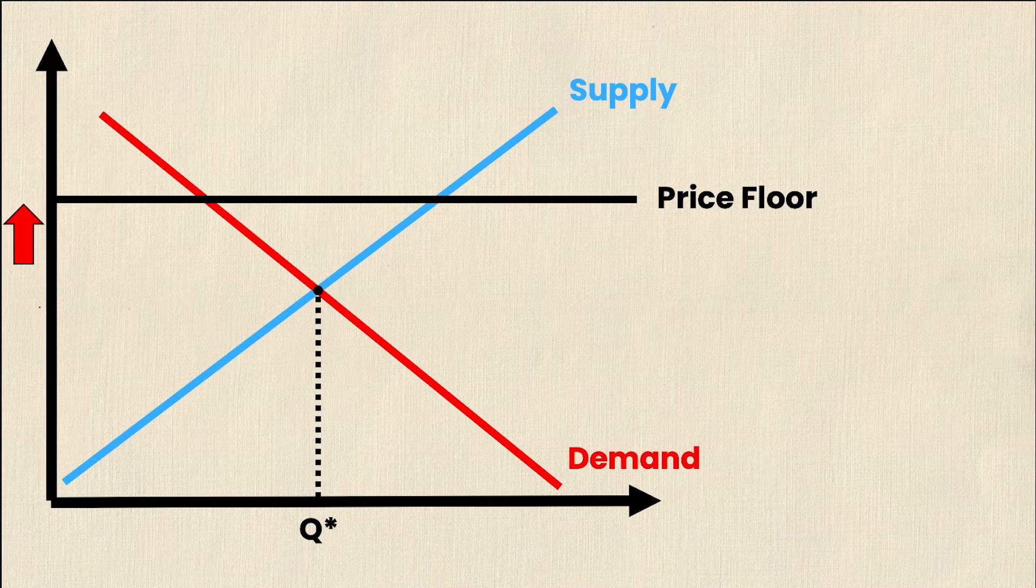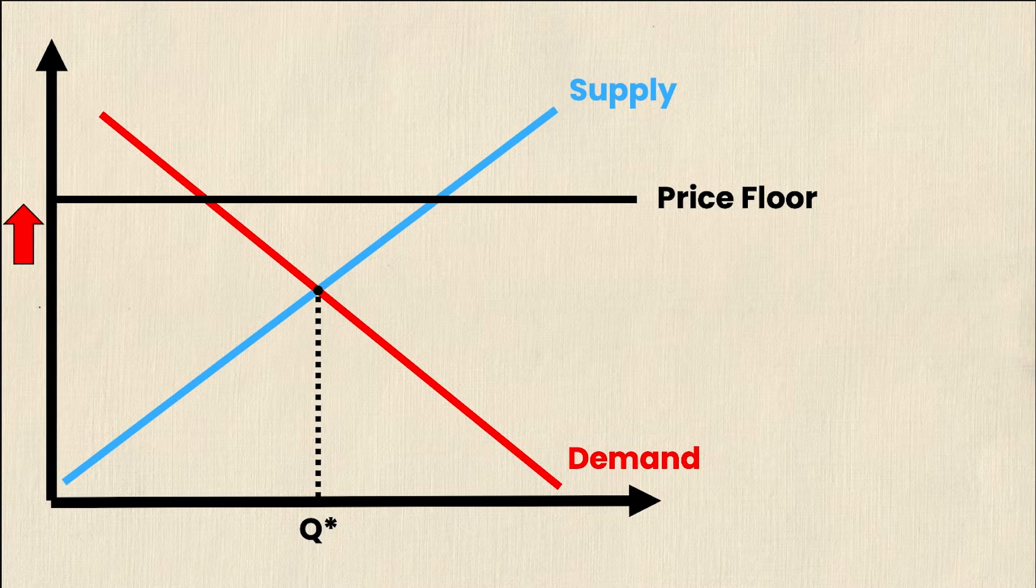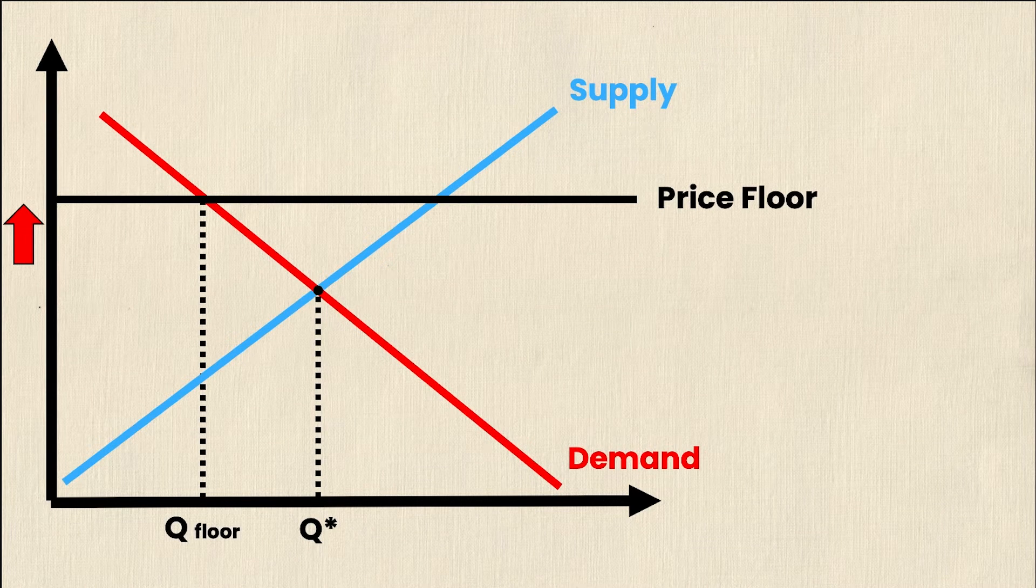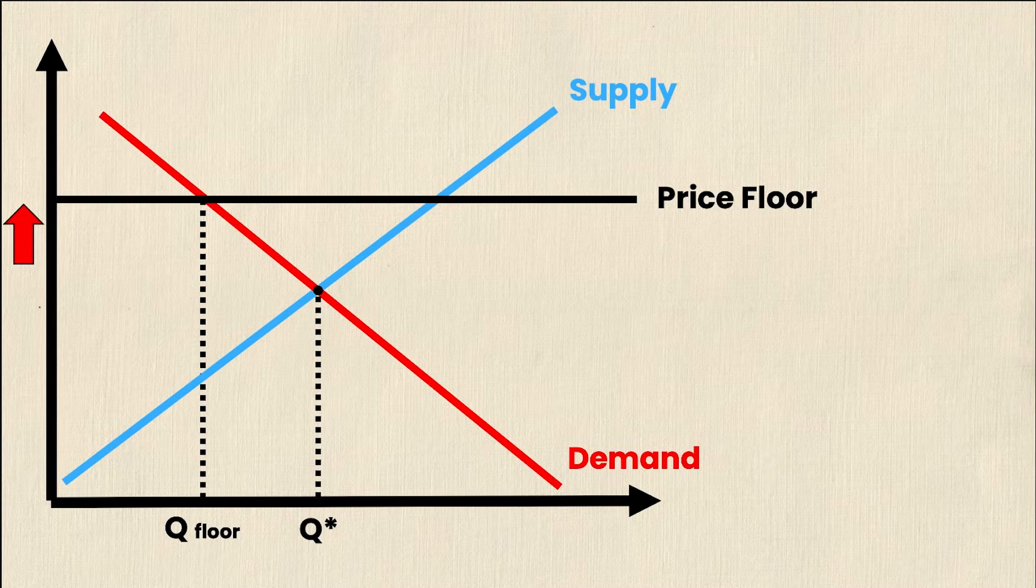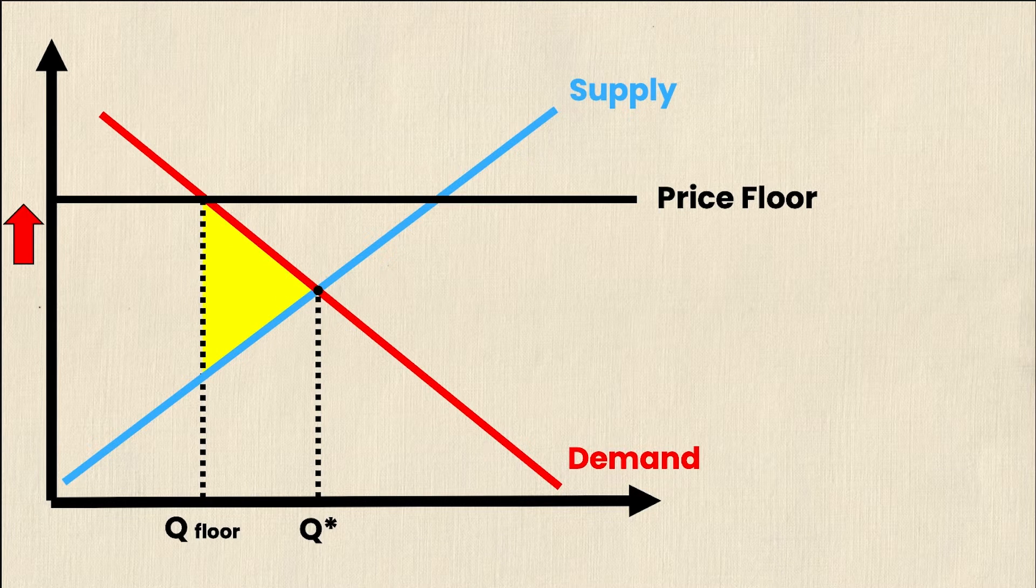But price floors lead to market inefficiencies. After all, the market is no longer in equilibrium. This will lead to something that economists call a deadweight loss, where both producers and consumers lose some of their surplus. This is depicted by the yellow triangle on screen. If you want a detailed video outlining deadweight loss, just let us know in the comments.